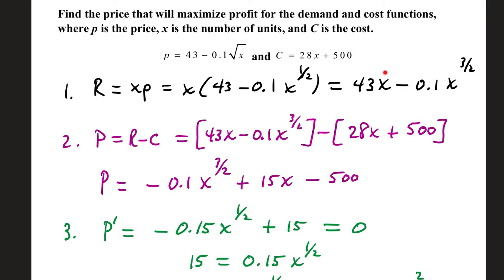Distributing x, that's 43x minus 0.1, x to the 1 plus 1 half is 1 and a half, or 3 halves. So just carefully distribute. This is our revenue function. Profit is revenue minus cost. So we take our revenue function we just built, subtract the cost function that was given. Subtracting like terms, we have negative 0.1x to the 3 halves. That's the only term like that one. 43x minus 28x is 15x, and then minus 500.